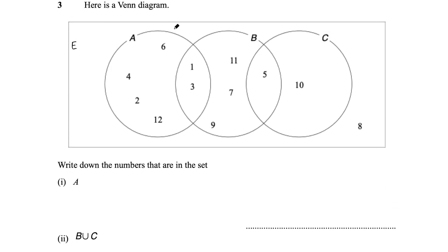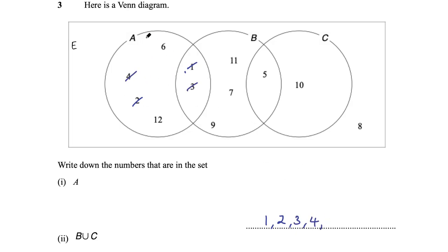Question 3 shows a Venn diagram with universal set and sets A, B and C. Part 1 says write down the numbers in set A — all numbers in circle A. Cross them out as you write them down to avoid missing any. The 6 numbers in set A are 1, 2, 3, 4, 6 and 12.